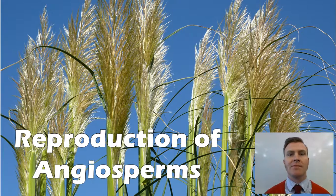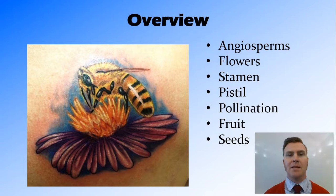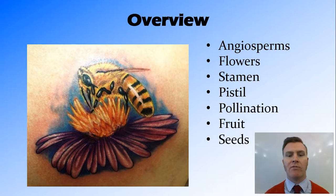Hi guys, in this video we're going to look at reproduction in angiosperms. We're going to firstly talk about what angiosperms are, the flowers, the parts of the flowers including the stamen and pistil, how pollination works, and the purpose of the fruit and seeds.